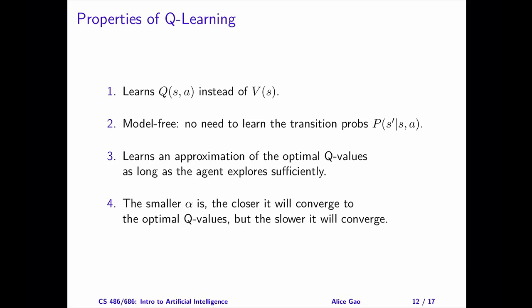Q-learning is a model-free algorithm, since it does not require us to learn the transition probabilities. In contrast, ADP is a model-based algorithm. Because of this, Q-learning requires much simpler computation than ADP.